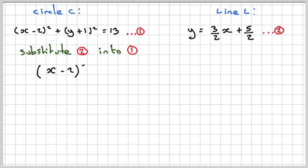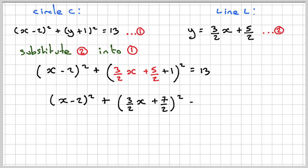Substitute equation 2 into 1, we get (x - 2)² + (3/2·x + 5/2 + 1)² = 13. It looks quite tricky, but it's not. So we've got (x - 2)² and then (3/2·x + 7/2)² = 13.